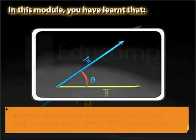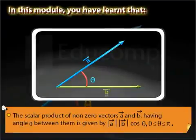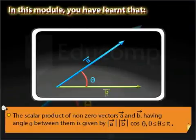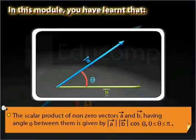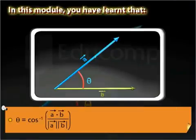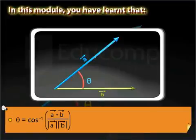In this module, you have learned that the scalar product of non-zero vectors A and B having angle theta between them is given by the magnitude of vector A times the magnitude of vector B times cos theta, where theta is the measure of the smaller angle between vectors A and B. When the dot product of vectors A and B is given, the angle theta between them is given by cos inverse of the dot product of vectors A and B divided by the magnitude of vector A times the magnitude of vector B.